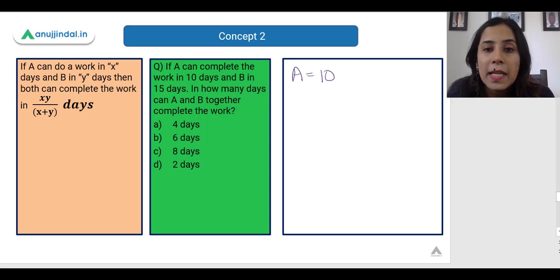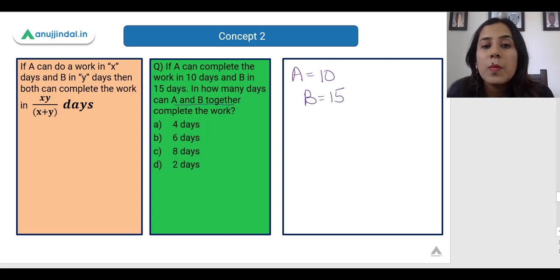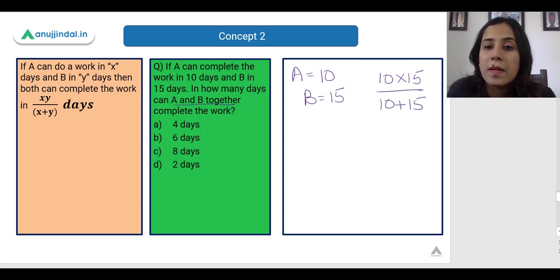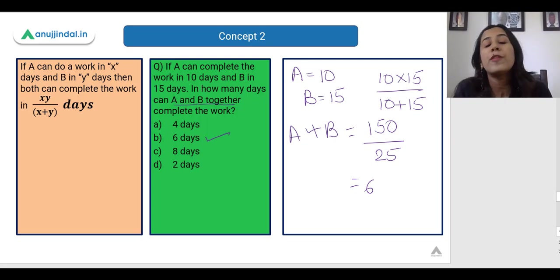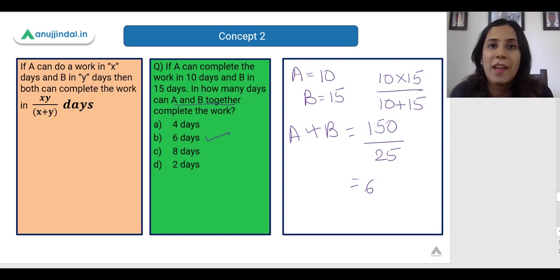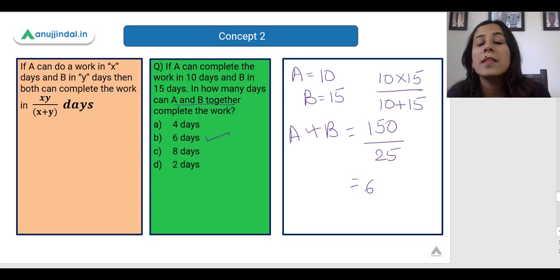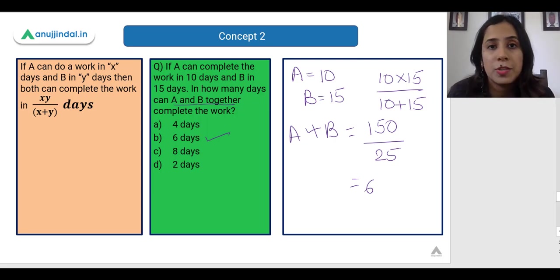B can do it in 15 days, and we need to find how long A and B working together will take. So we compute (10 × 15) / (10 + 15) = 150 / 25 = 6 days. If I had solved this by the traditional method it would have taken much longer, but here I solved it within seconds. Please memorize these formulas, but also keep in mind that you should know the traditional method as well.